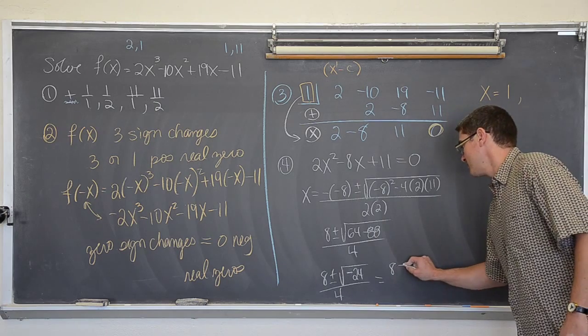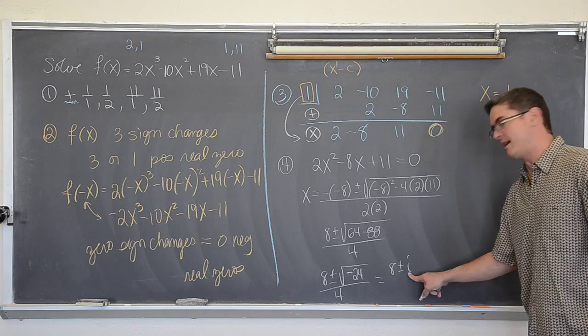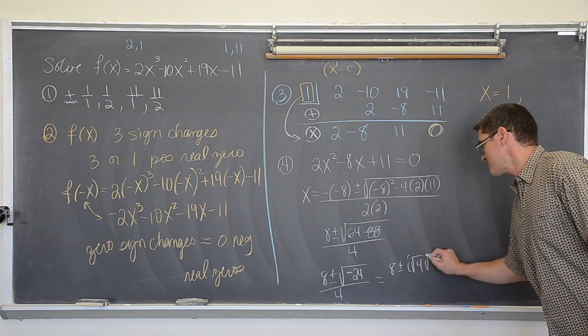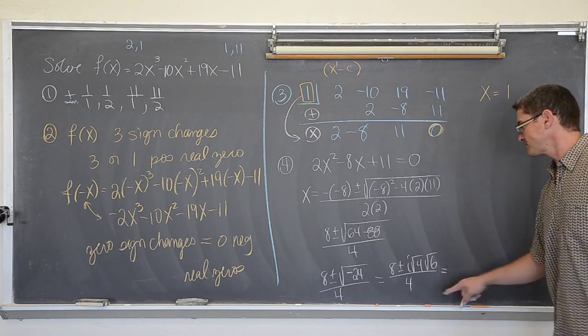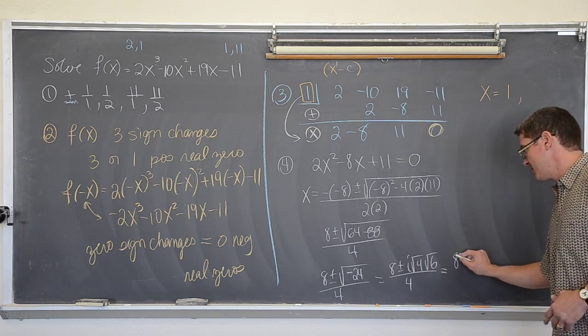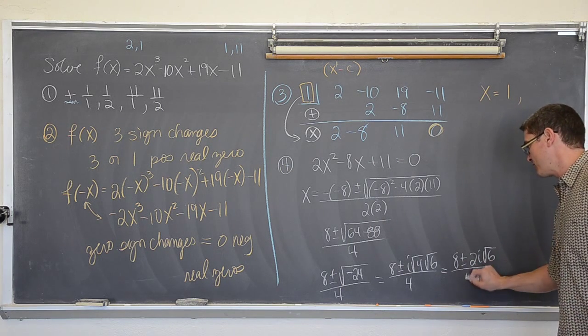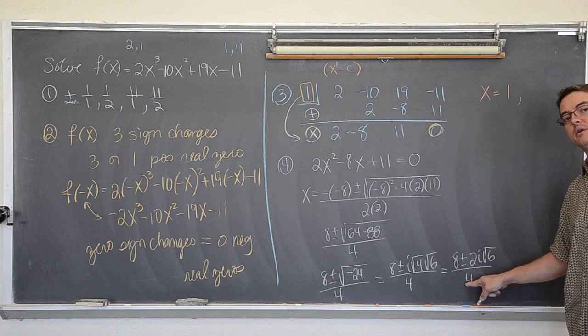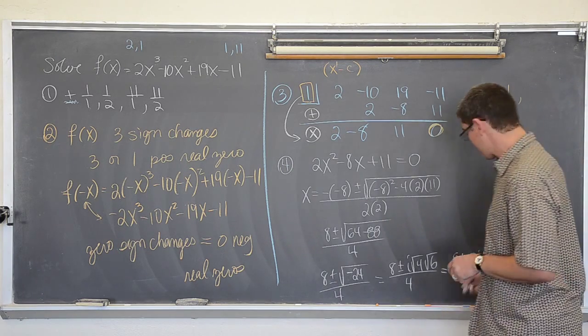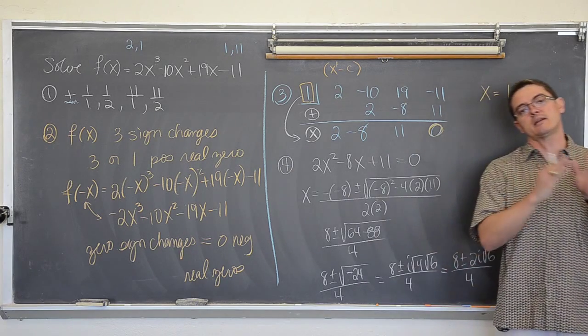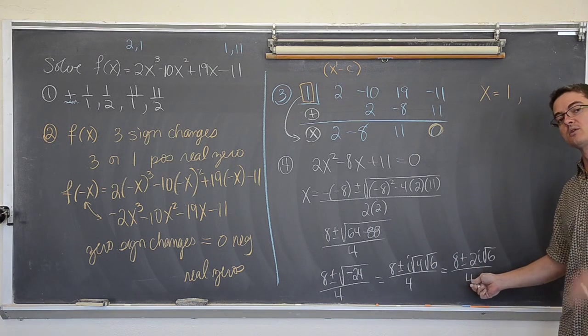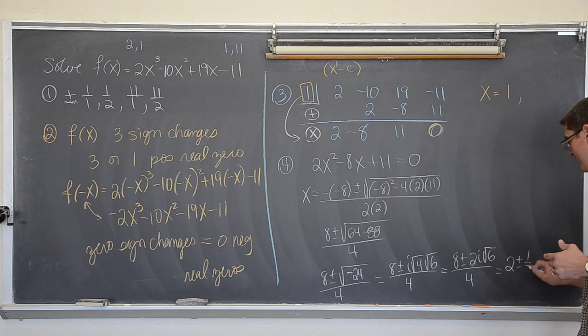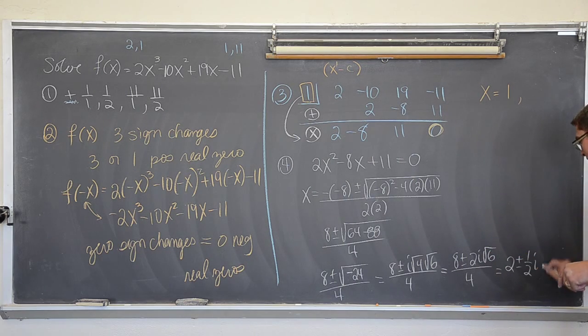So here we have got 8 plus or minus i. I am going to take out the negative 1 in the form of i. And is there a perfect square root of 24 like 4? That is the square root of 4 times the square root of 6 over 4. The square root of 4 is 2, so now we have got 8 plus or minus 2i times the square root of 6 over 4. All of these three terms, 8, 2, and 4, all have a factor of 2. So 8 over 4 is equal to 2 plus or minus 1 half i square root of 6.